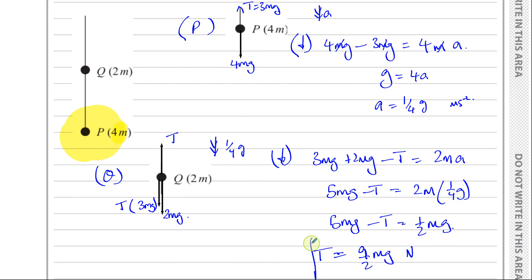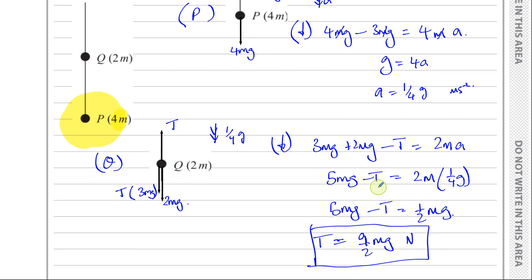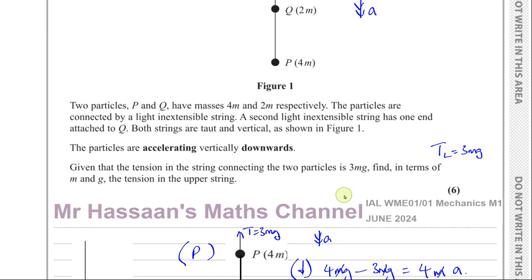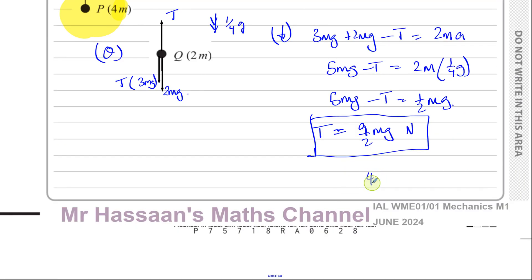So finding T: T equals 5mg minus half mg, which is 10/2 mg minus 1/2 mg, giving 9/2 mg newtons. That is the tension in the upper string, which is the same as 4.5mg.